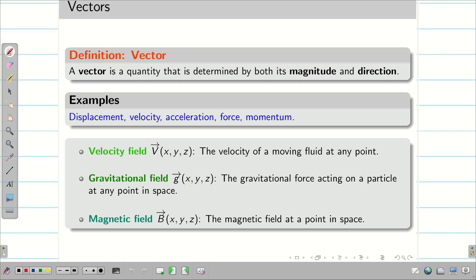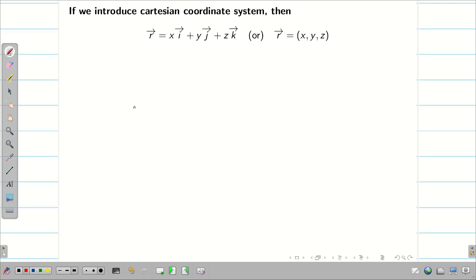Now, we introduce a Cartesian coordinate system. It is very important. Throughout the unit, we are going to take R vector as xi vector plus yj vector plus zk vector.